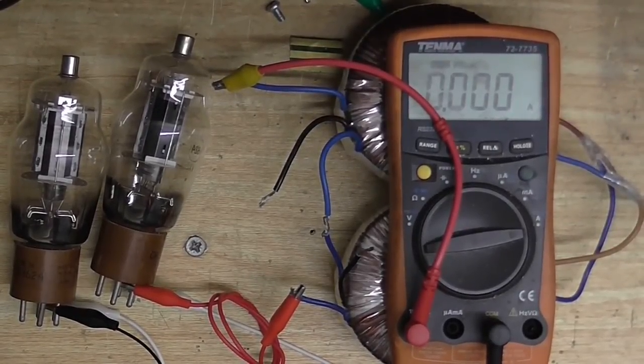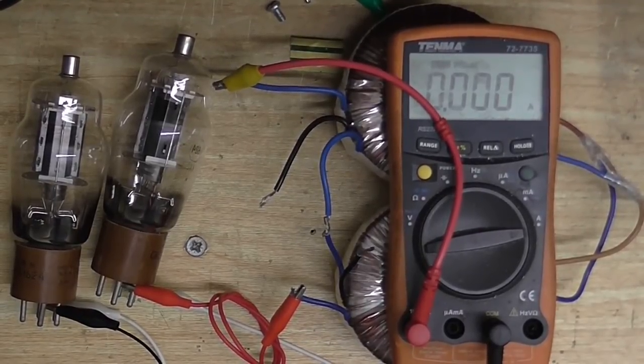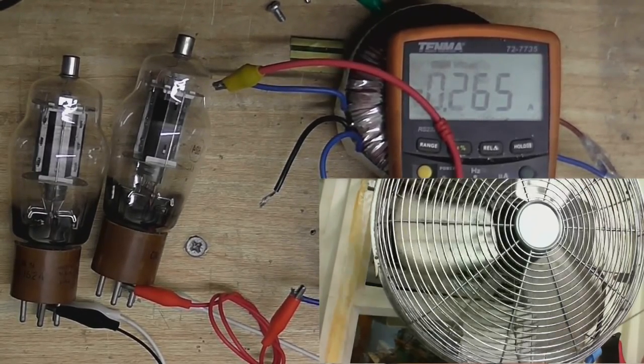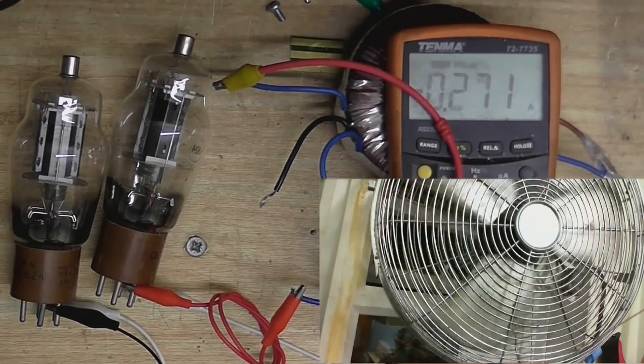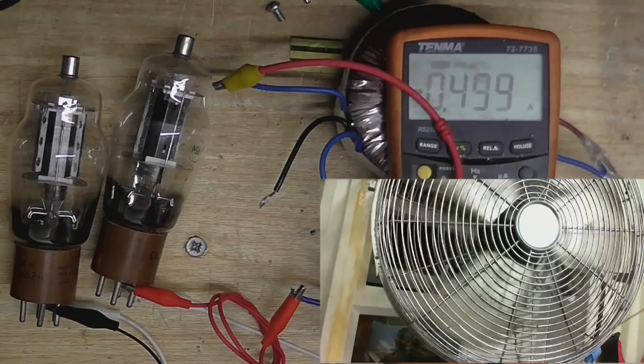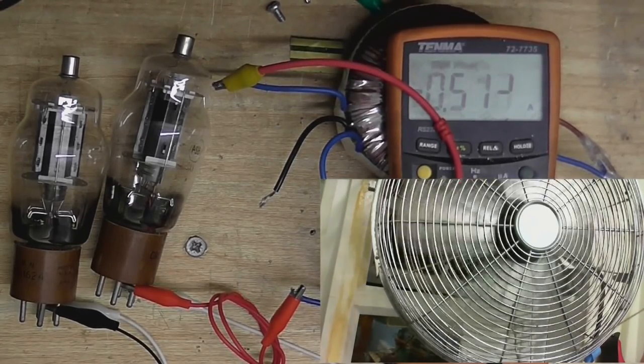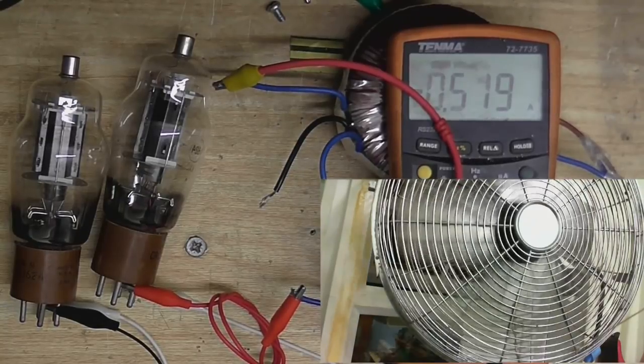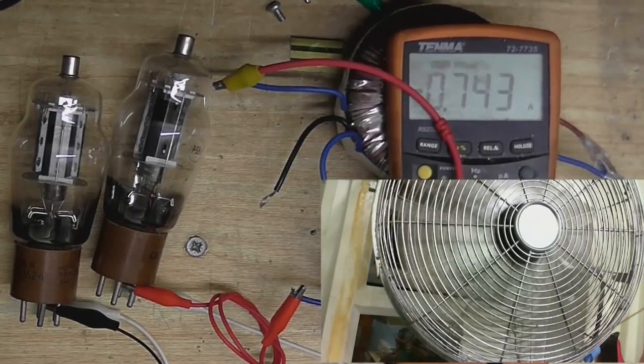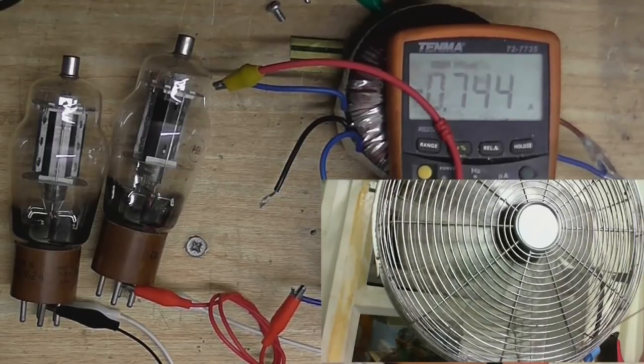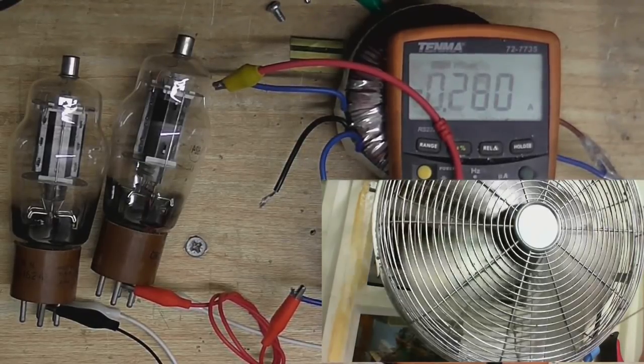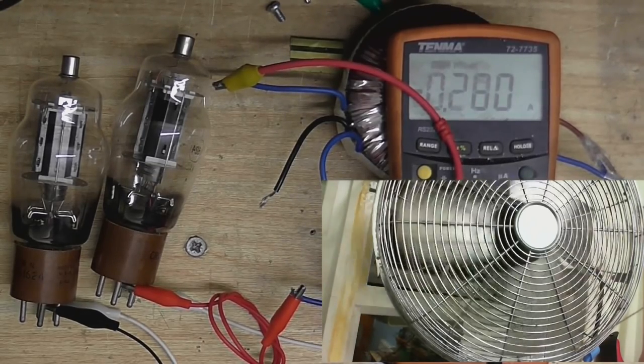I've also got my meter in line with the power supply so we can check on the current. So let's turn it on and see what happens. Okay, we've got about 270 milliamps. I'm going to start turning up the voltage, which should increase the current. Okay, we're about 500 milliamps. It's got to 700 milliamps, 750 milliamps, and now we're at full power. Back down to about 300 milliamps. You can see that's working pretty good.